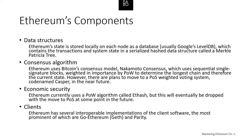Ethereum's consensus algorithm uses Bitcoin's consensus model — Nakamoto consensus — which uses sequential single-signature blocks weighted by proof-of-work to determine the longest chain and therefore the current state. However, there are plans to move to a proof-of-stake voting system codenamed Casper in the near future. For economic security, Ethereum currently uses a proof-of-work algorithm called ETHash, but this will eventually be dropped with the move to proof-of-stake. Ethereum has several interoperable implementations of client software, the most prominent being the Go Ethereum (Geth) client and Parity.